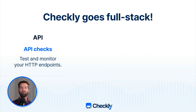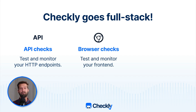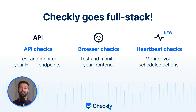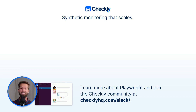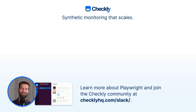And this is it — Checkly goes full stack. Use our API checks to monitor and test your APIs for correctness, uptime, and performance. Use our browser checks and control headless Chrome with Playwright to ensure that your front end is working as expected and that you're delivering a good user experience. And now use our new heartbeat checks to monitor all your scheduled actions and get alerted when something running on a schedule broke or is not working anymore. If you have any questions or feedback, make sure to drop into our Checkly community at checklyhq.com/slack. I will talk to you very soon again, showing you the next Checkly features.